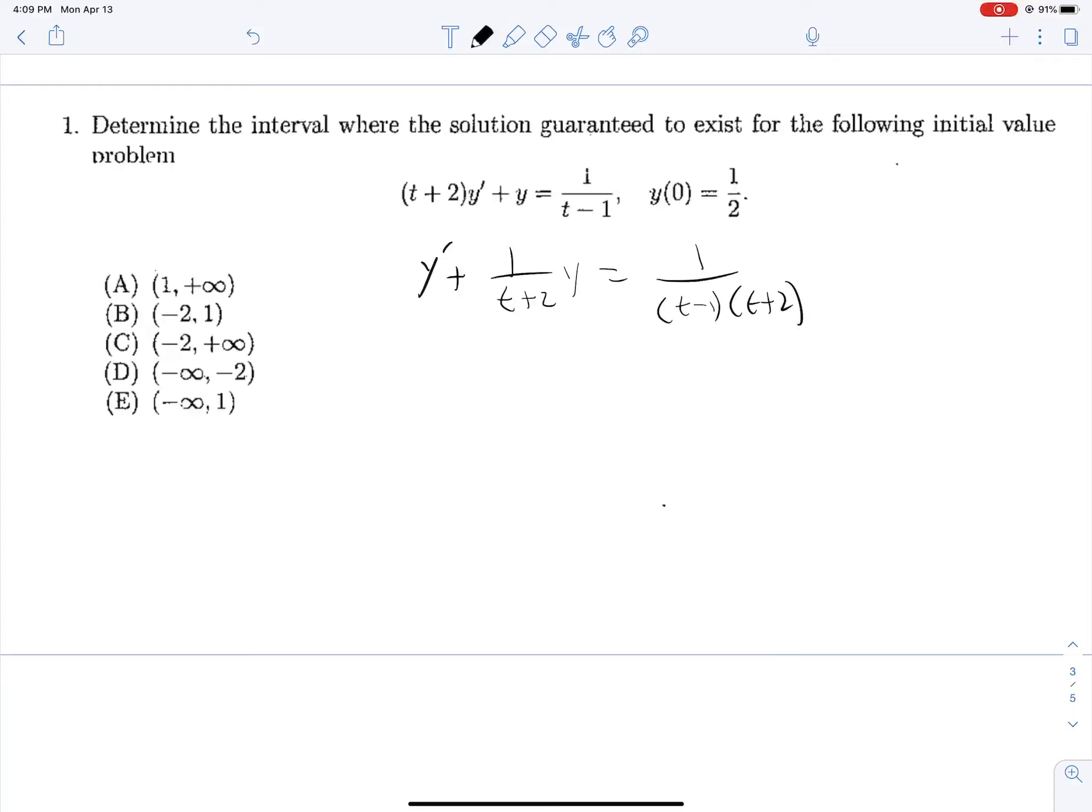And we'll see that our discontinuities occur when t is equal to 1 and t is equal to negative 2. So since we have an initial condition for t is equal to 0, which falls right between 1 and negative 2, these are our bounding discontinuities for our solution. And so we're only guaranteed to have a solution that exists between negative 2 and 1.